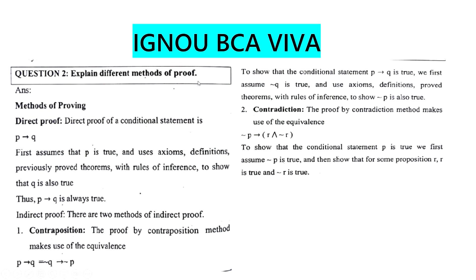Explain different methods of proof. The first is a direct proof: we assume P is true, then we show Q is also true. The second method is Contraposition: we use the negation of Q, assume it true, and prove the negation of P is true using definitions or theorems. The third method is Contradiction: we assume negation of P implies R, and also negation of R — forming a contradiction — and from this we prove the statement.